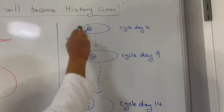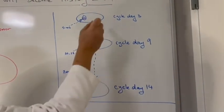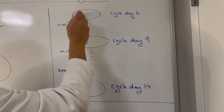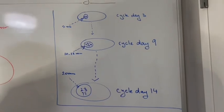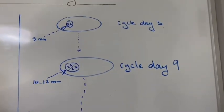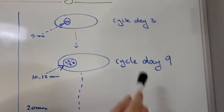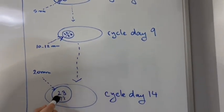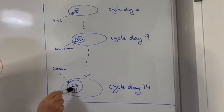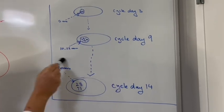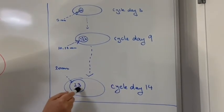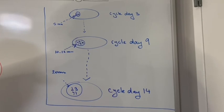If we look here in the menstrual cycle, on cycle day three, the follicle where the 46 chromosomes is still small, you can't get it. When it reaches cycle day 14, it's too late. It's already 23 or already split and the follicle is big. This is where we usually do the egg retrieval in regular IVF cycle.